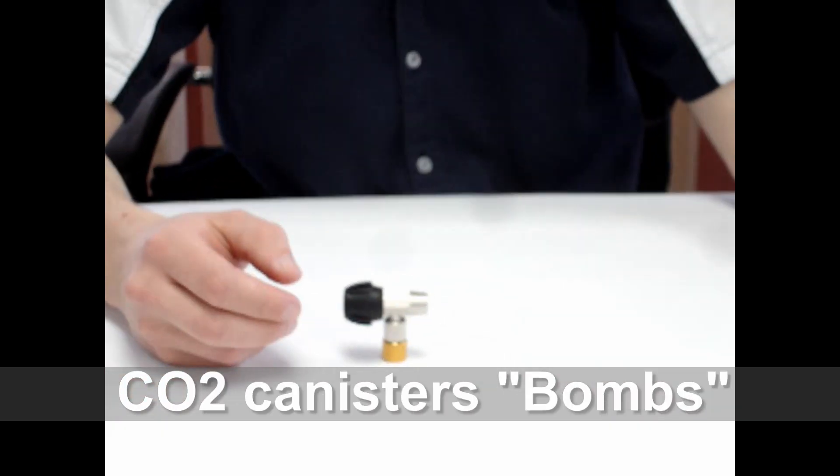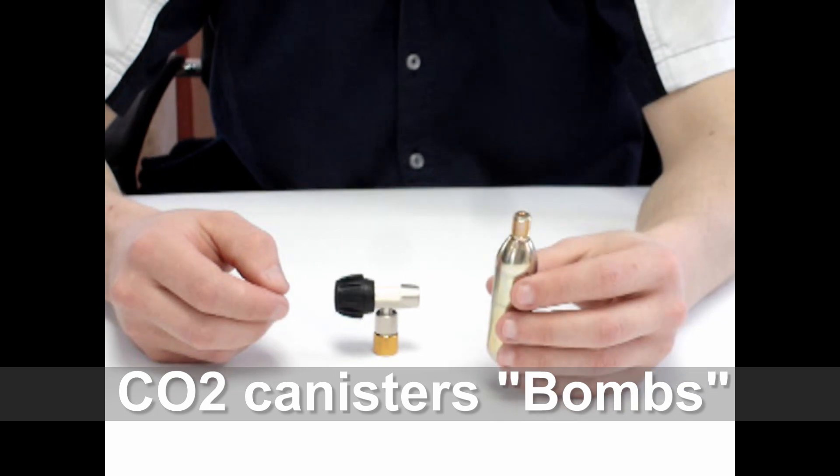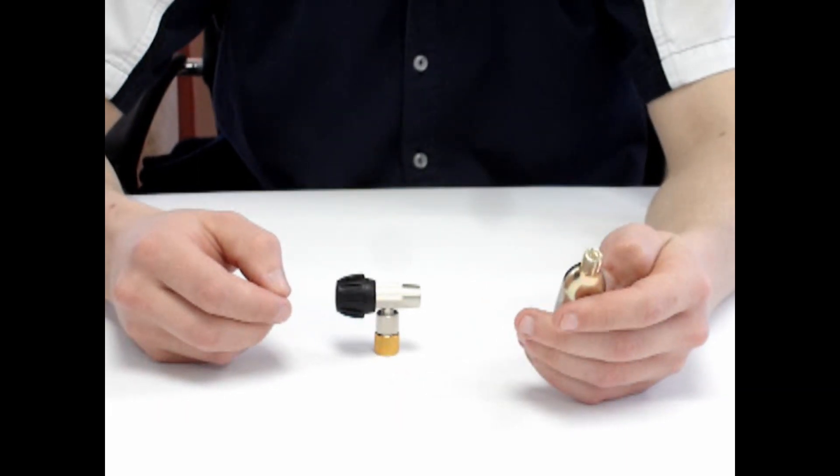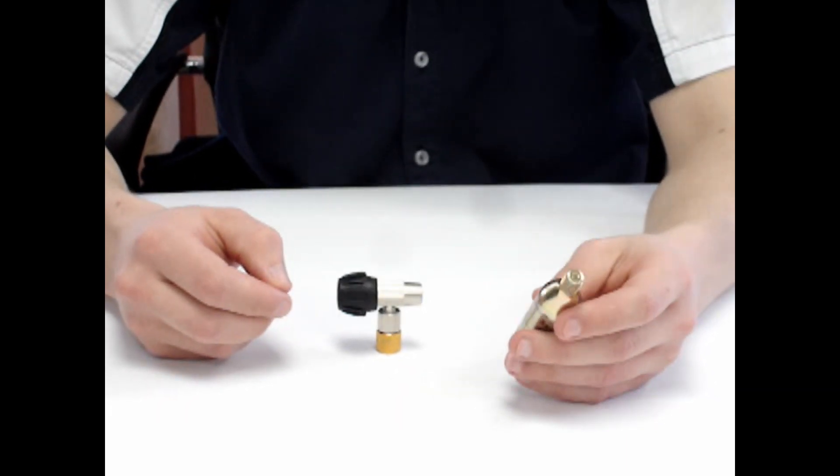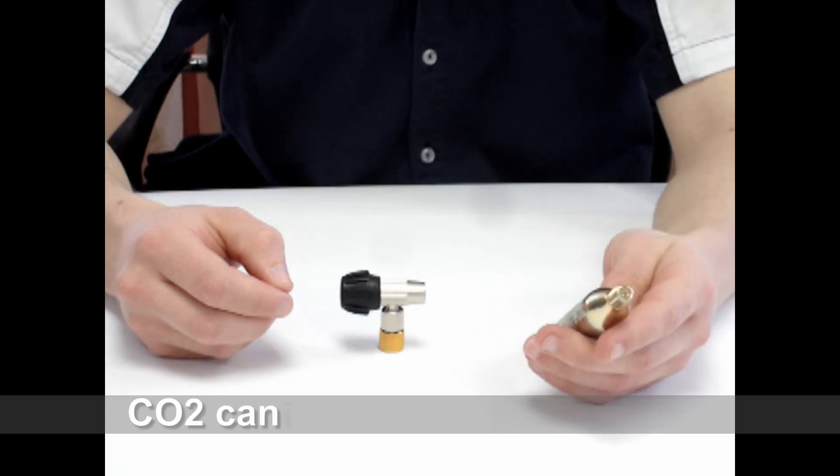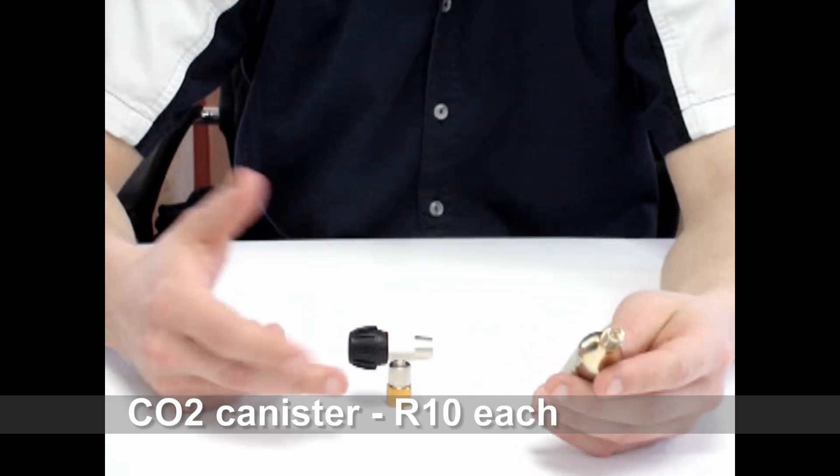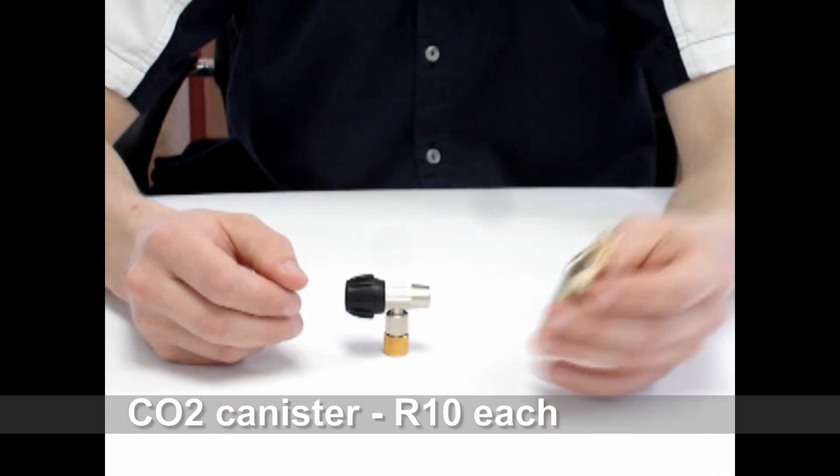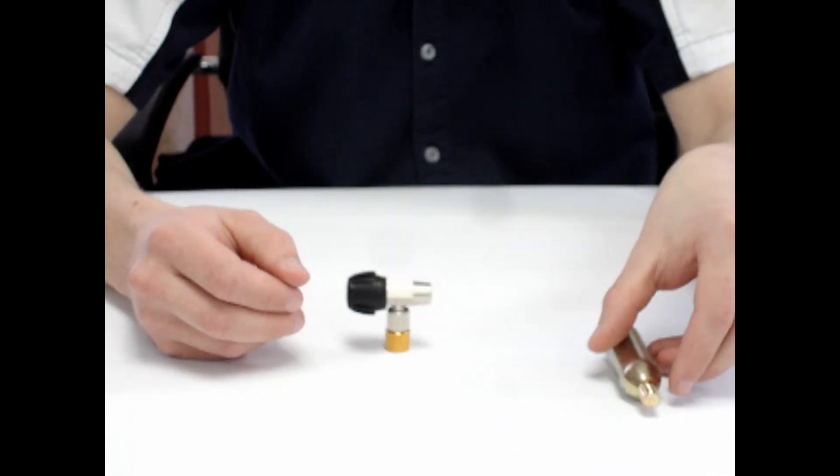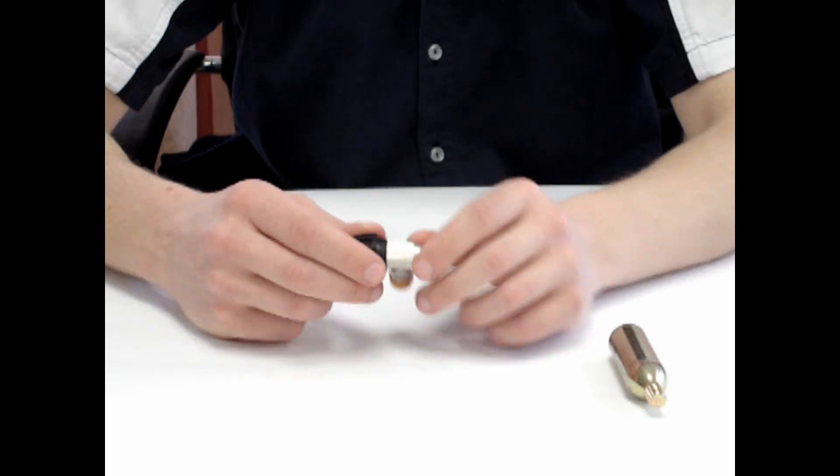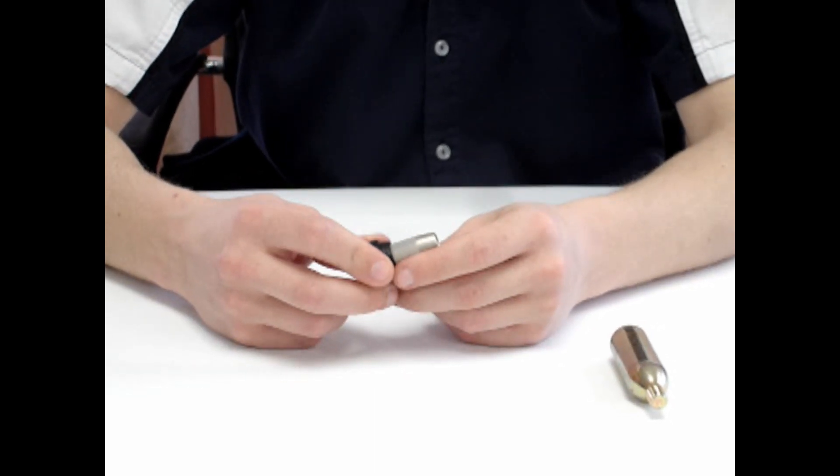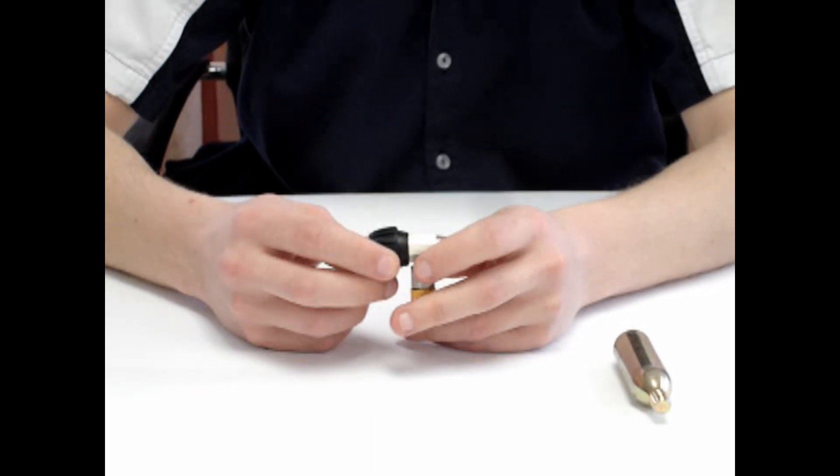This morning we're going to be looking at how to use your CO2 canister, which most cyclists know as a bomb. Now, as simple as it is to actually use the bomb, most guys actually haven't had a chance to use one yet and a lot of people make some very basic mistakes. Even people who've used bombs frequently often make these basic mistakes. Just to make sure that you don't ruin your ride wasting your last bomb, we're just going to go through some basics on what to remember.